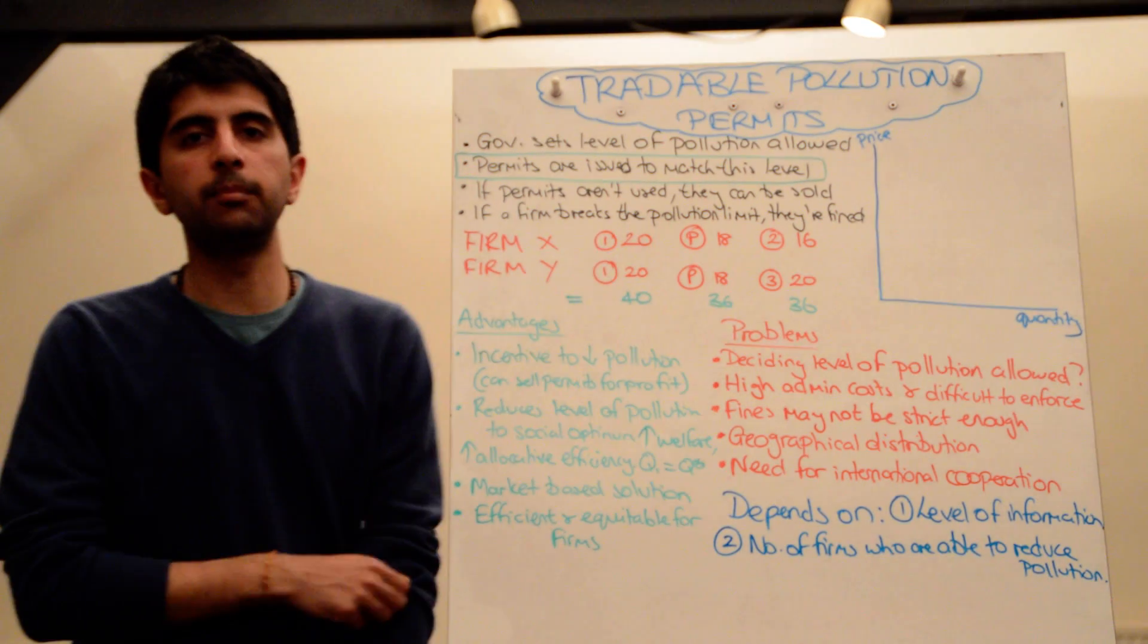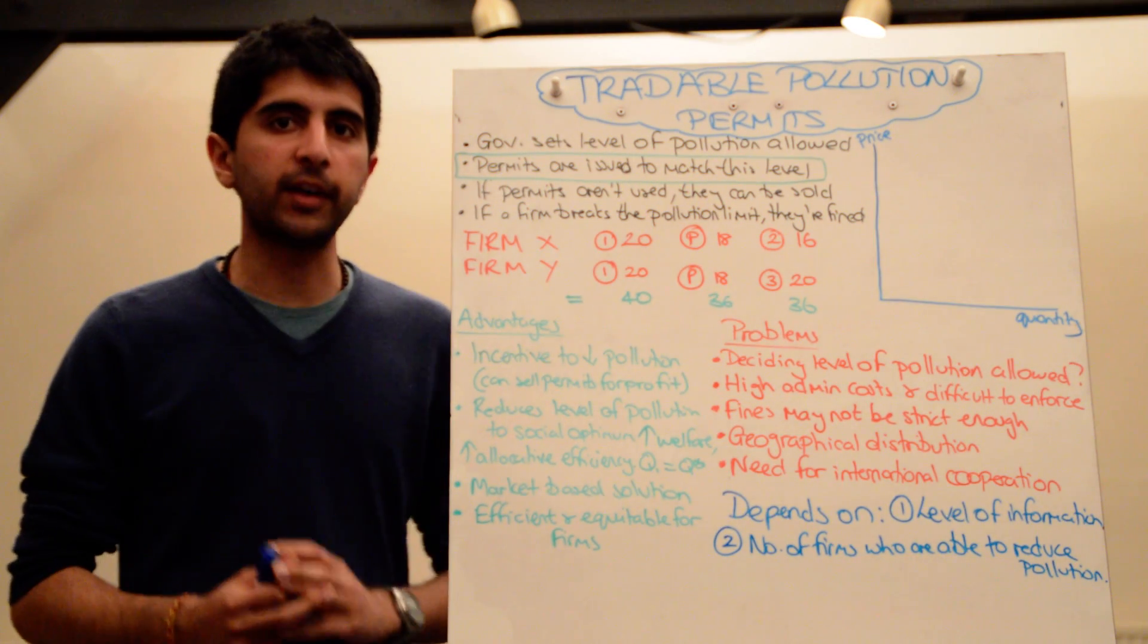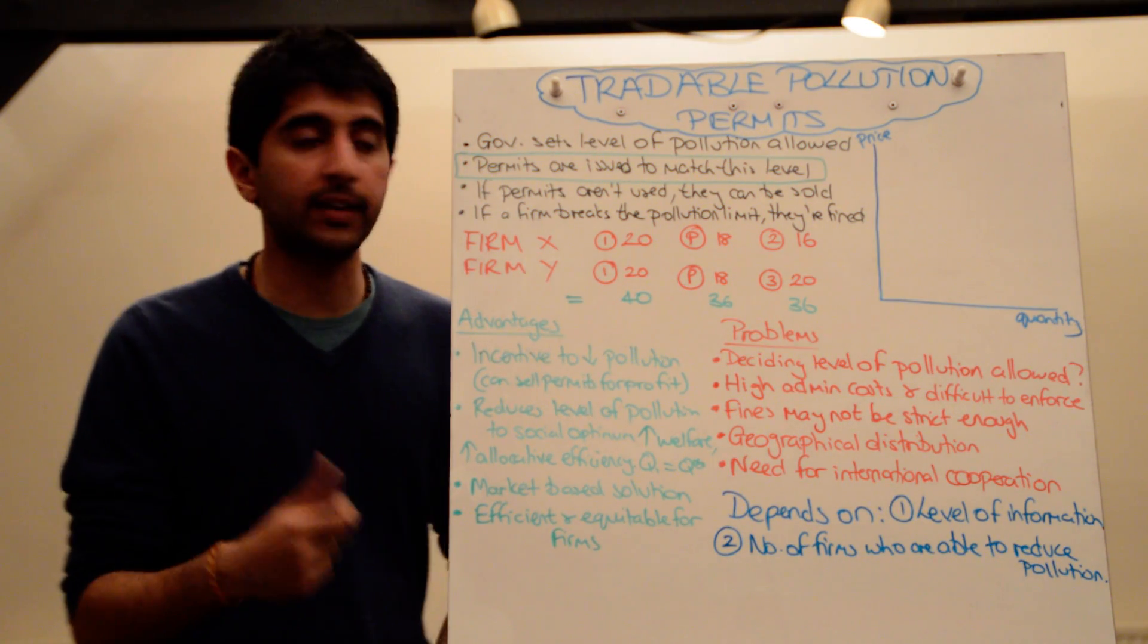Let's now look at tradable pollution permits as a method of dealing with pollution market failure as a specific type of negative externality.